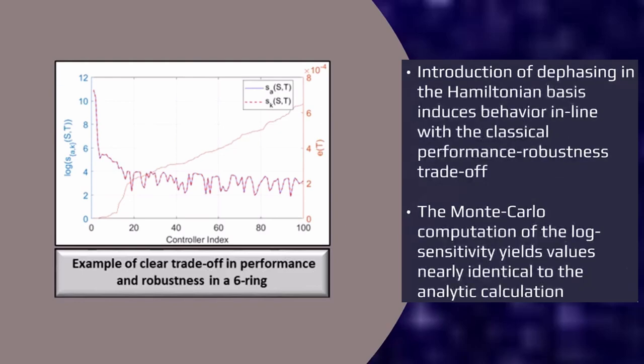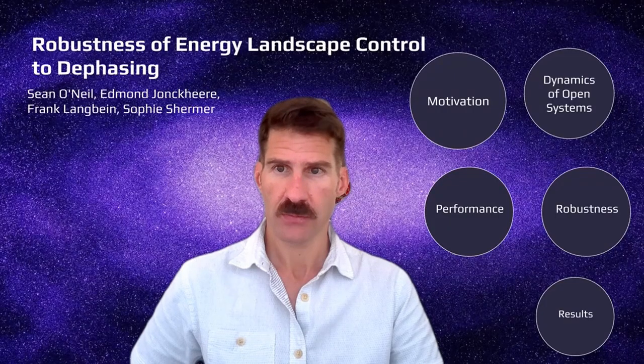Second, we note that the two methods of calculating the log sensitivity, one analytic and the other stochastic, are in near-perfect agreement. We see this in this chart, where the blue line, which is the analytic calculation of the log sensitivity, and the dotted black line, the Monte Carlo-based approach to the calculation, both lie nearly on top of each other. This provides options to the practitioner in leveraging the most efficient method for the task at hand.